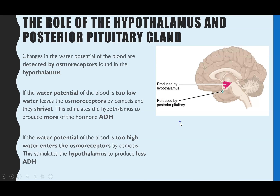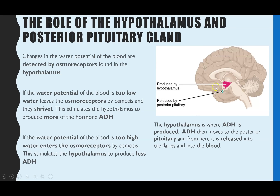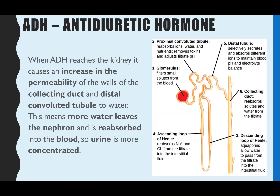The posterior pituitary gland is where ADH is released from. That gland secretes ADH into the blood, and once in the blood it is transported around the body until it reaches its target organ, which is the kidney.